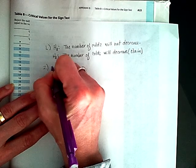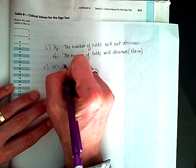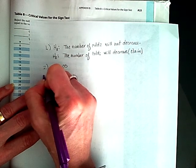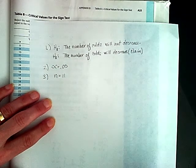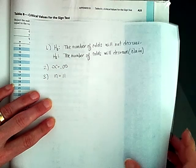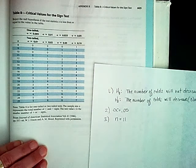At number 2, I have an alpha at 0.05. Step 3, I'm using a sample size of 11, and I'm going to go to my table 8 to find this value.